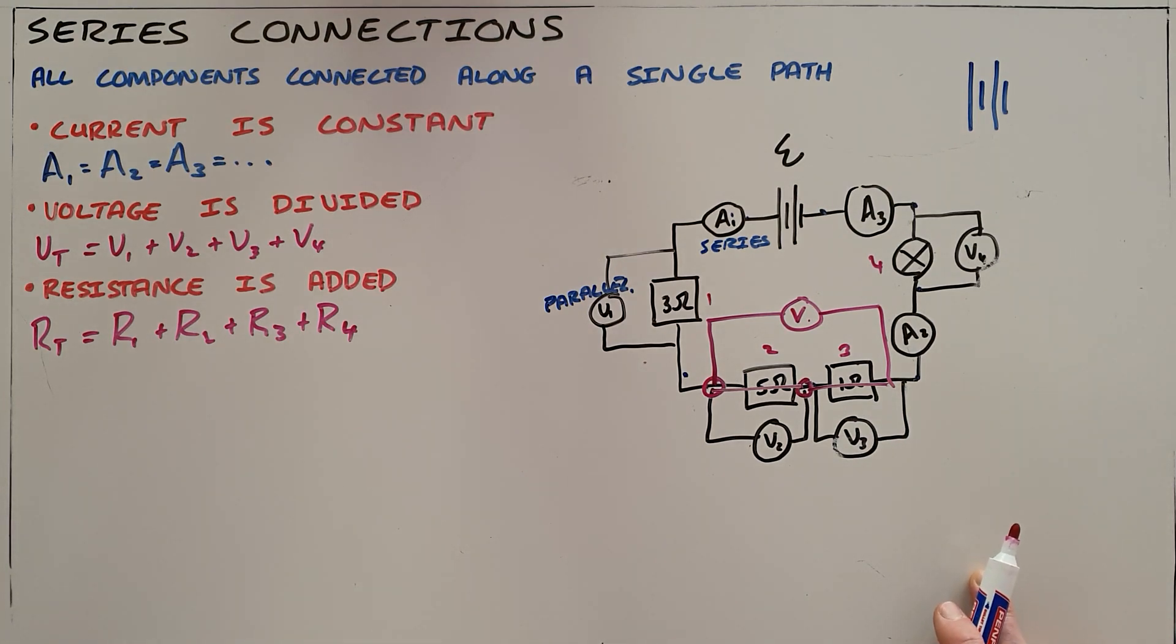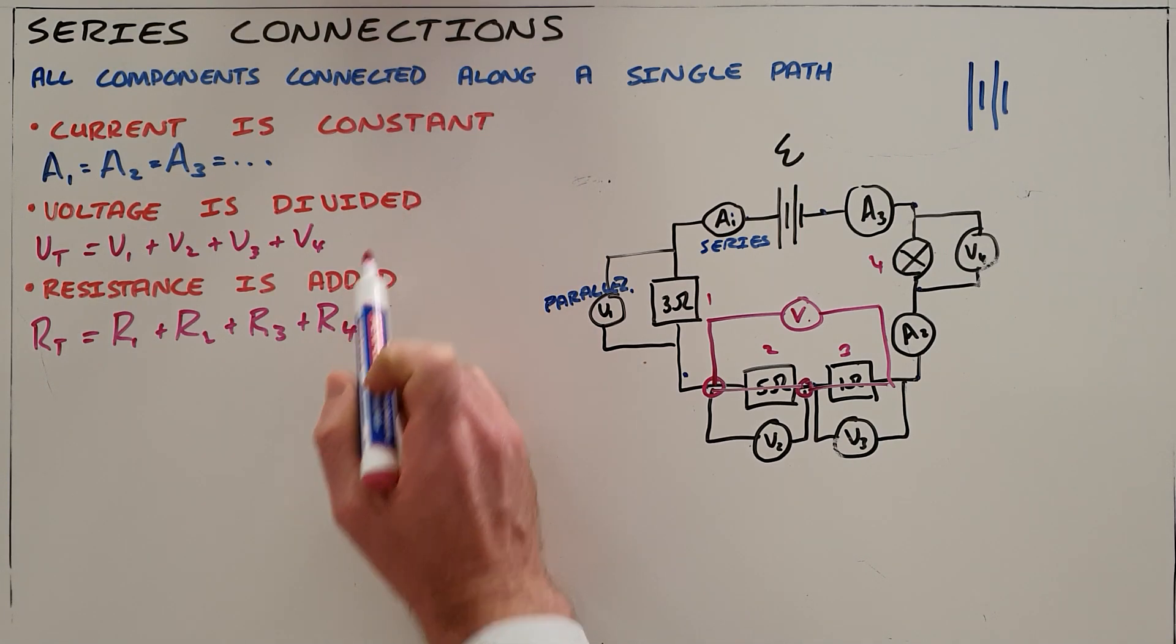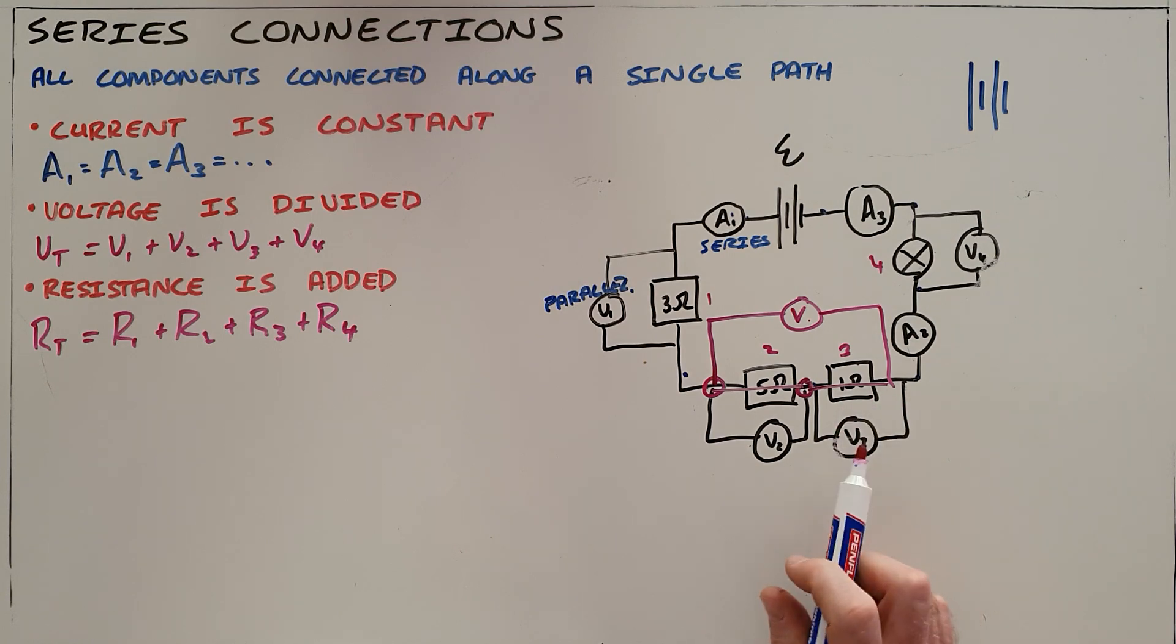So with these rules for series connections—current is always constant, voltage is divided, and resistance is added—you can now use Ohm's law to solve for any unknowns in any series connection that you are given.